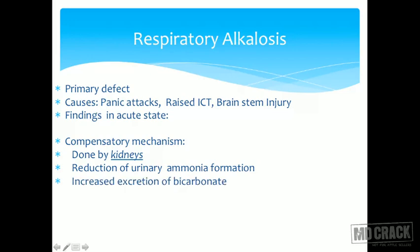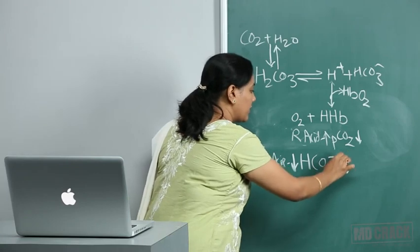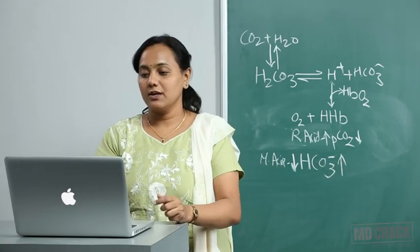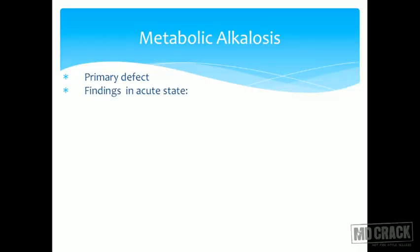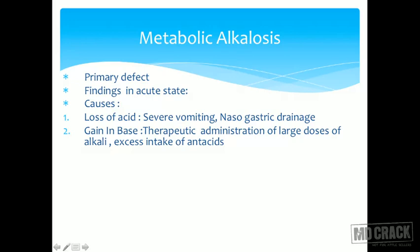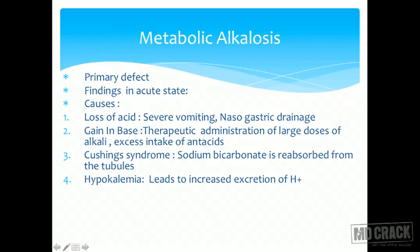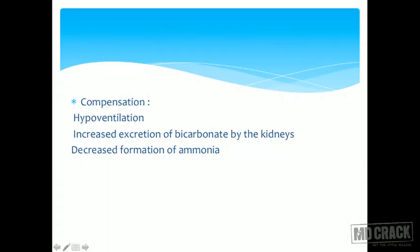Metabolic alkalosis requires bicarbonate to increase — the primary defect is increased bicarbonate. Findings in the acute stage: bicarbonate increased, pH alkaline. Causes include loss of acid such as in severe vomiting or nasogastric drainage, gain in base from therapeutic administration of large doses of alkali, excess antacid intake, Cushing syndrome where sodium bicarbonate is reabsorbed from tubules, and hypokalemia leading to increased excretion of protons.